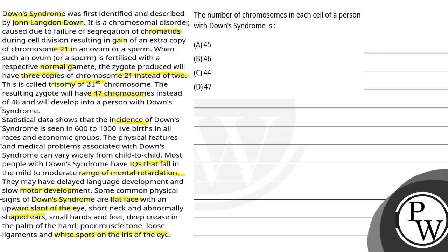We have given this paragraph that is related to Down syndrome and we have asked a question: the number of chromosomes in each cell of a person with Down syndrome is? And we have four options given that is 45, 46, 44, and 47.